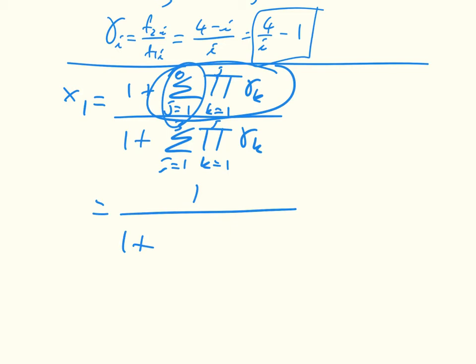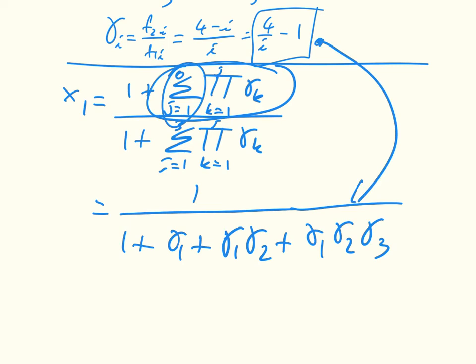So it's going to be gamma 1, so when j is equal to 1, I'm taking the product from k equals 1 to 1 of gamma k, so that's gamma 1, plus now when j is equal to 2, I've got the product from k equals 1 to 2, so gamma 1 times gamma 2, plus when j is equal to 3, I've got gamma 1 times gamma 2 times gamma 3.